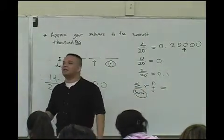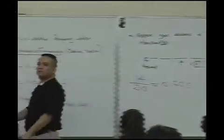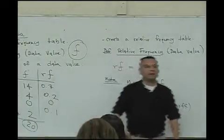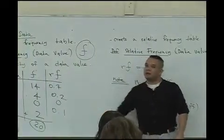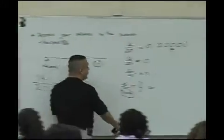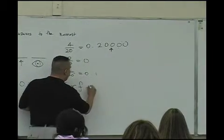What do you get? What's 0.7 plus 0.2 plus 0 plus 0.1? You get what? You get 1. Is that right?